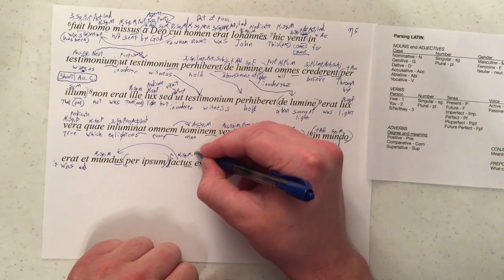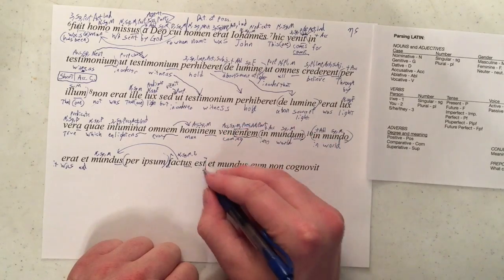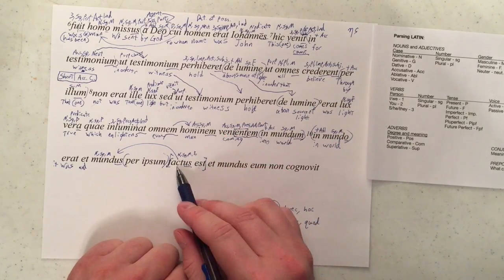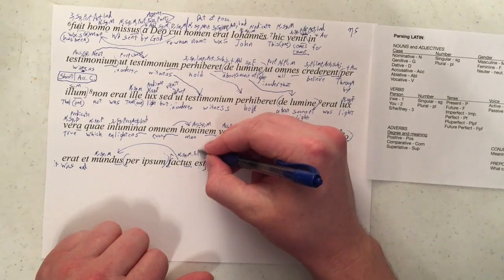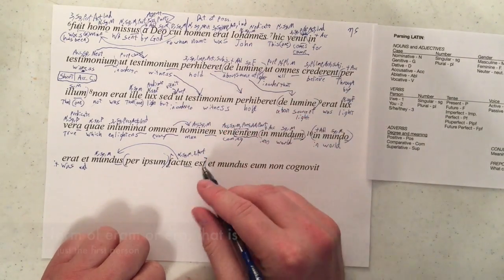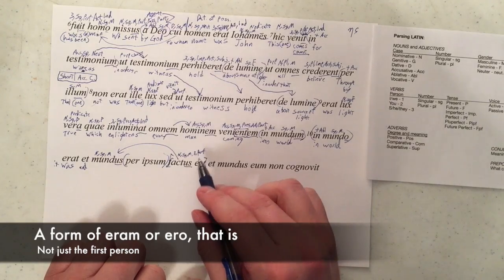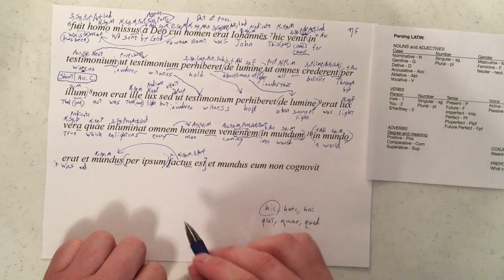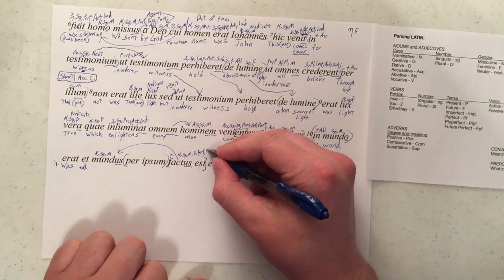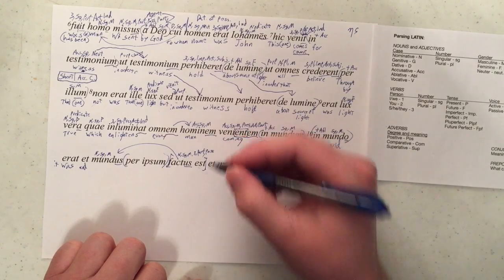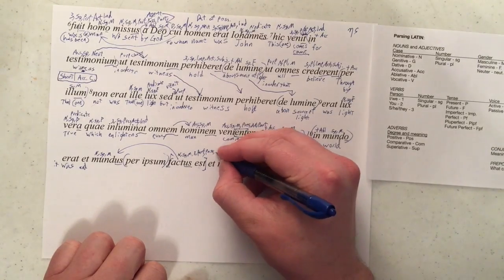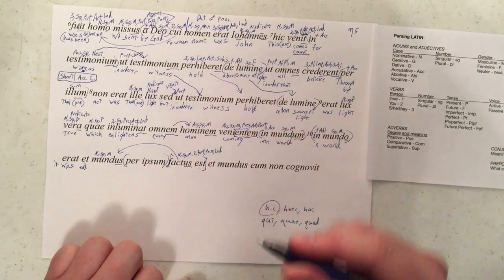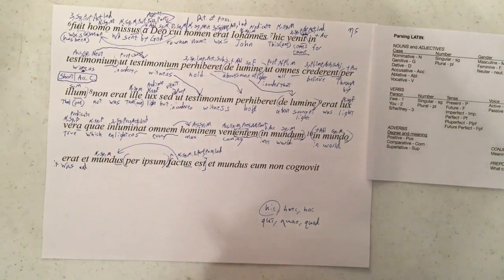Since est, we know it's going to be third person, and that matches with the singular. Since factus and est are together, we know this is going to be a perfect tense. If it had been eram, we would know that it would be pluperfect. If it had been ero, we would know it would be future perfect. This is going to be passive, passive-periphrastic after all, and it's going to be an indicative verb. So no special clause here, which is nice.